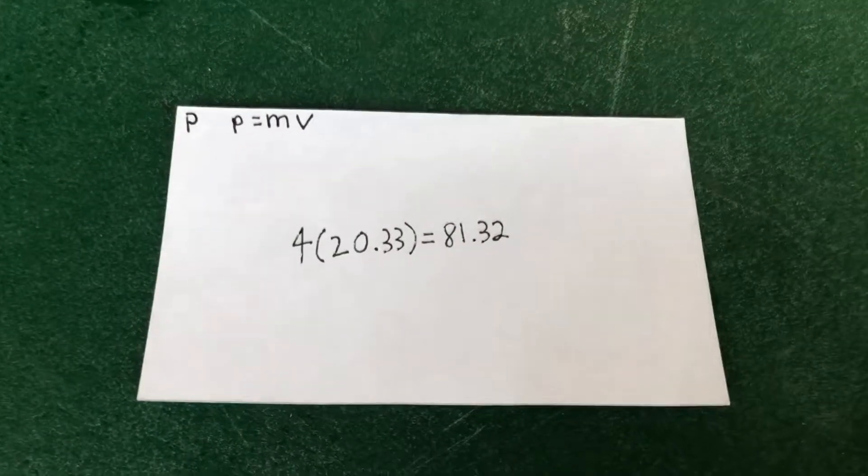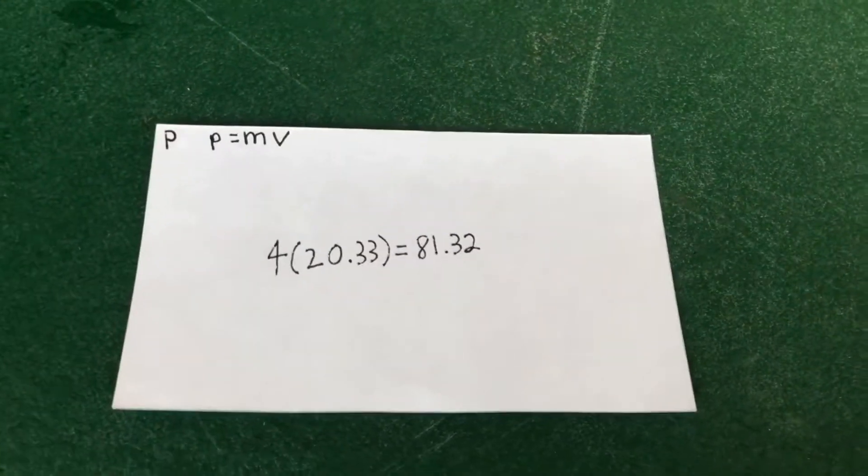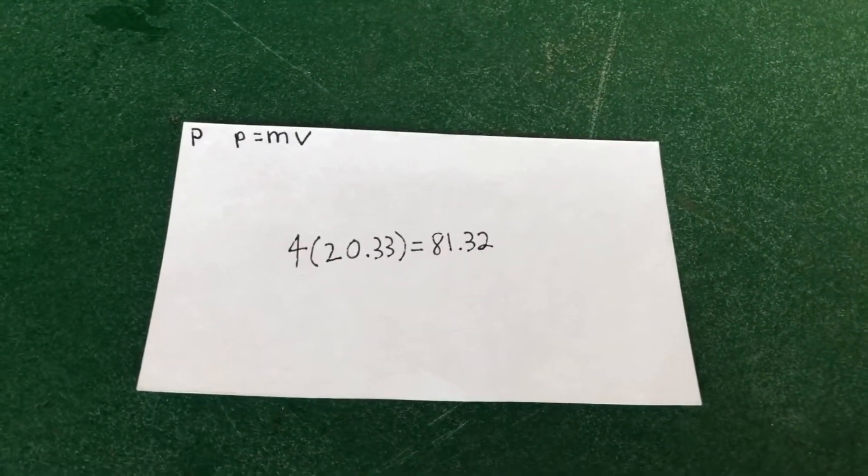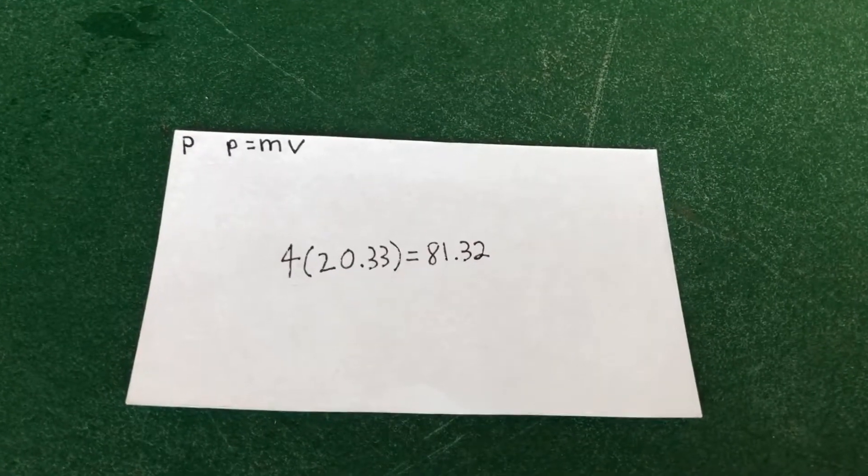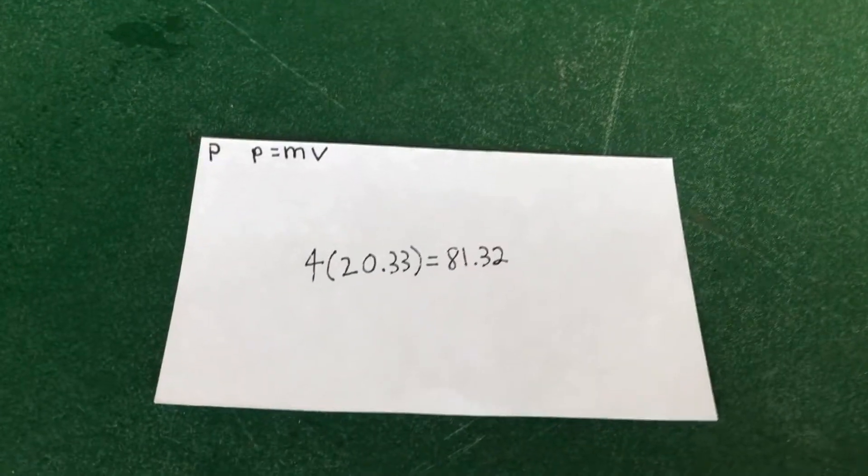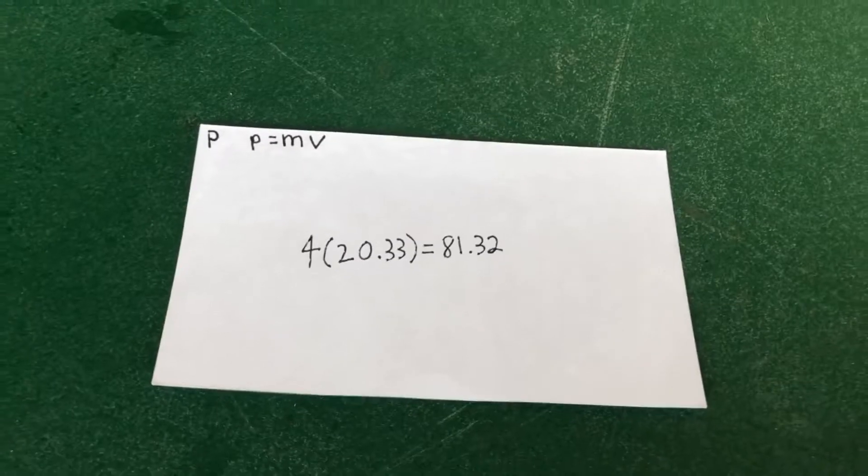To find the momentum, we used mass times velocity. We multiplied 4 kilograms by 20.33 meters per second, and our momentum is 81.32 kilograms times meters per second.